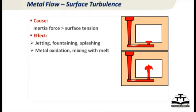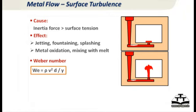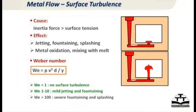There are also a few other measures like surface turbulence, where we look at inertia force versus surface tension. One such number is the Weber number, comparing surface tension and inertia force. If it is less than 1, it is great. From 1 to 10, which is common in metal casting, you may have some jetting and splashing. More than 100 is a really severe fountaining effect, which you do not want.